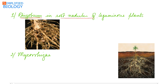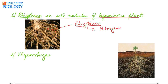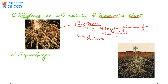The first example of mutualism is Rhizobium, present in the root nodules of leguminous plants. In leguminous plants, root nodules are seen where the Rhizobium bacteria lives. The Rhizobium carries out nitrogen fixation for the plant, makes nitrogen available to it, and in turn derives nutrition from the plant. So they both help each other.